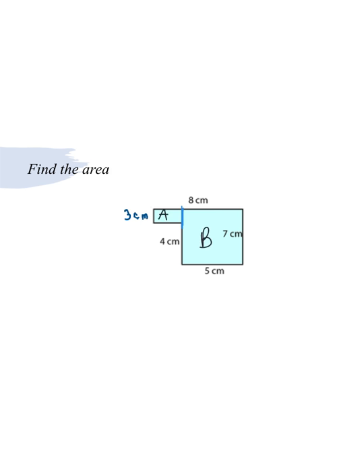So if I'm looking at rectangle A, to find the area here, we're going to multiply 3 times whatever this is right here. Okay. Well, I'm going to write A equals 3 times. How do I figure out what that missing number is?